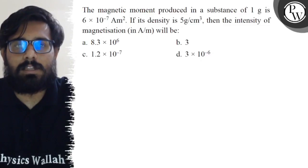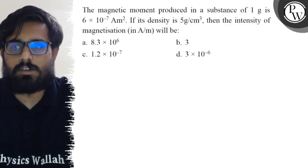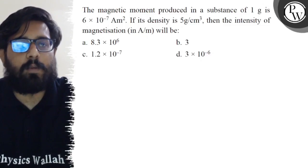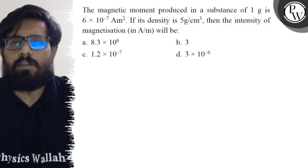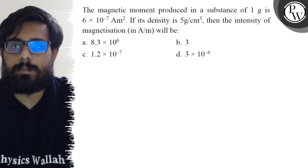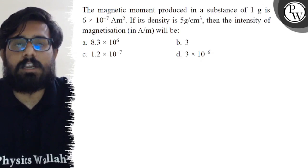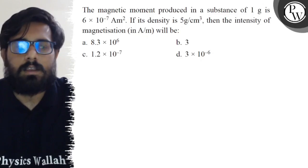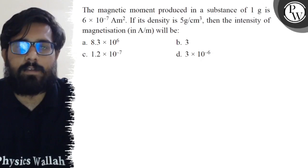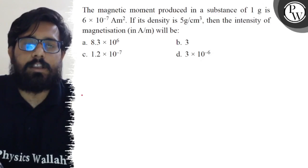Hello Bacho, let's see the question. The magnetic moment produced in a substance of 1 gram is 6×10^-7 ampere meter square. If its density is 5 gram per centimeter cube, then the intensity of magnetization will be: option A is 8.3×10^6, option B is 3, option C is 1.2×10^-7, and option D is 3×10^-6.